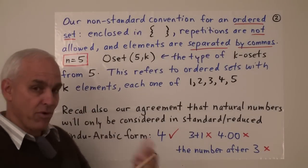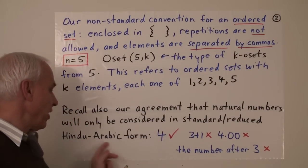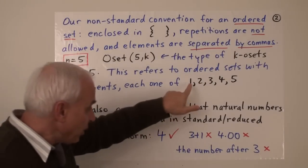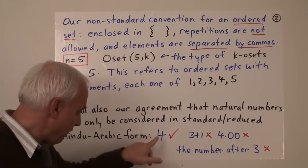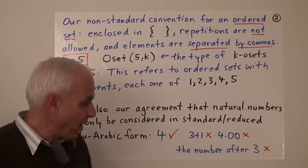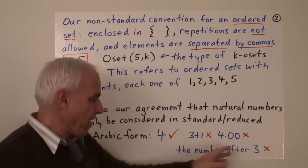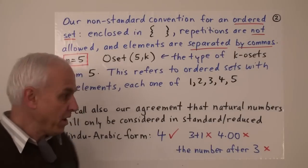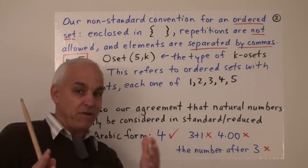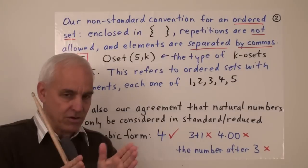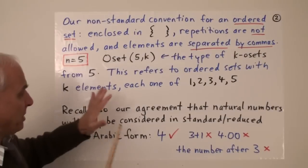And let's also recall our prior agreement that natural numbers for us are only going to be considered in standard or reduced Hindu-Arabic form. So if we want to write a 4 we're going to write it that way. We're not going to allow 3 plus 1. We're not going to allow 4.00. We're not going to allow some description like the number after 3. If you want to express the quantity 4 there's one and only one way that we're going to allow and that's like this. So we're going to take the approach sort of of a computer, where we seriously constrain things so that we know exactly what we're talking about.